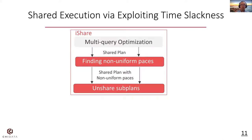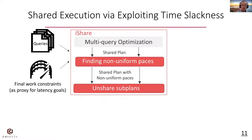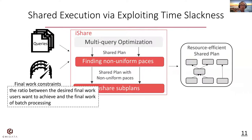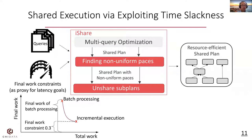We propose iShare to solve this problem. iShare takes a set of scheduled queries along with their final work constraints as input. It first uses an existing multi-query optimizer to generate a shared plan, then finds the non-uniform paces for this shared plan to reduce the total work. It additionally unshares some subplans to further reduce the total work. The final work constraint is defined as the ratio between the desired final work users want to achieve and the final work of batch processing. For example, a final work constraint of 0.3 means users want to reduce final work to 30% of batch processing.